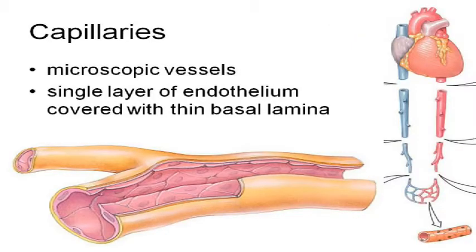The capillaries are the only blood vessels that are thin enough to actually accomplish what the cardiovascular system is there for: to allow good stuff to be delivered to the tissues — nutrients, oxygen — and then to pick up the bad stuff — carbon dioxide, waste materials.